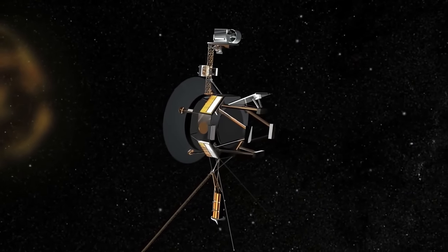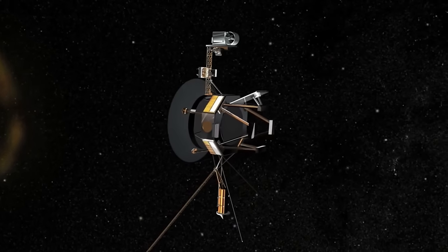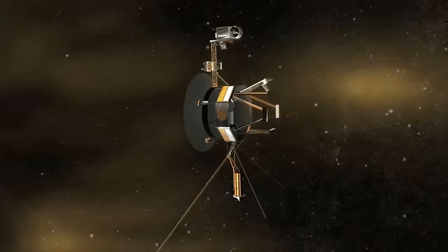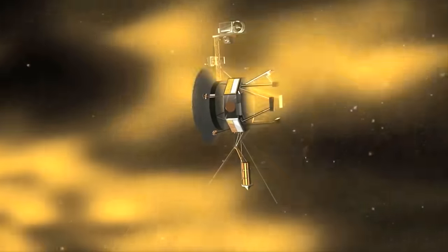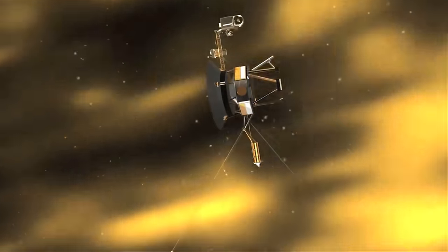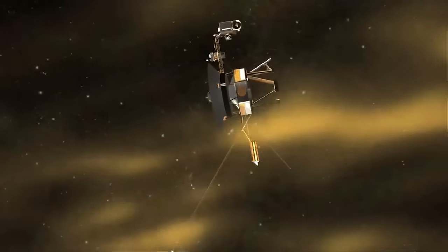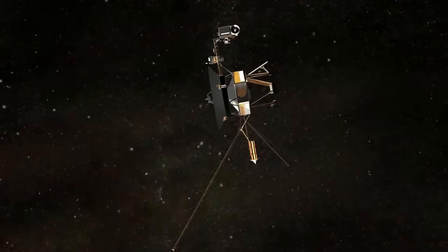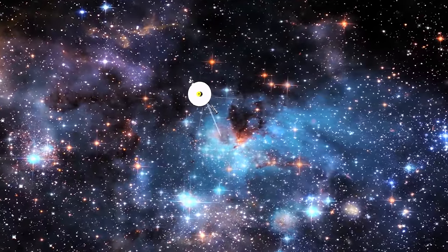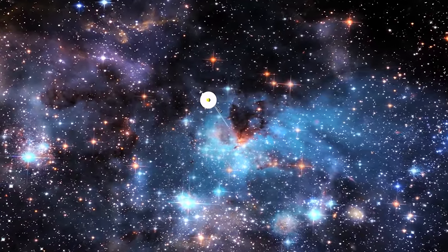As of today, the farthest man-made object is Voyager 1, which, after 40 years of travel, is approximately 19 light hours from Earth in interstellar space. It would still require several millennia to reach the nearest star system in its path.